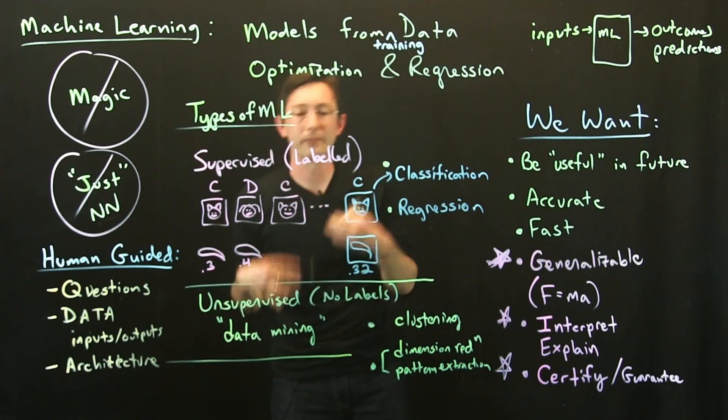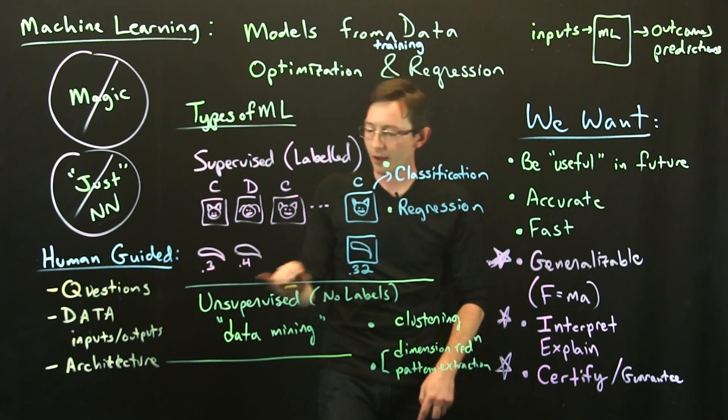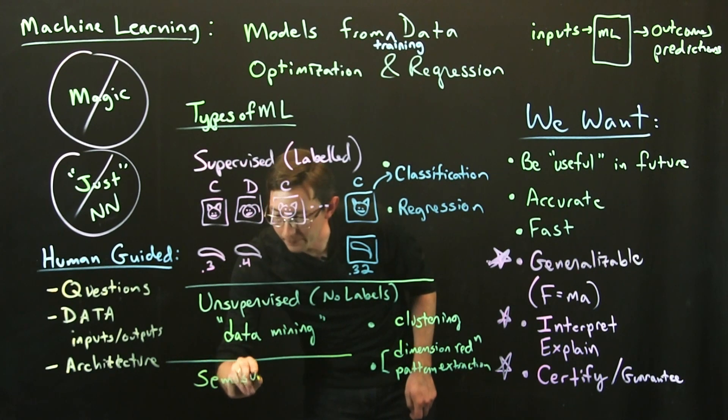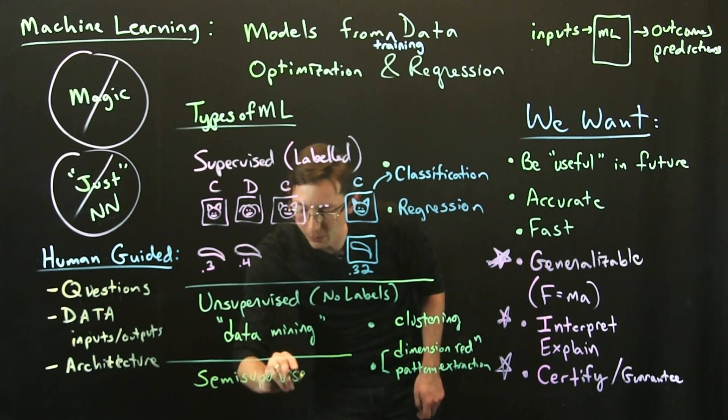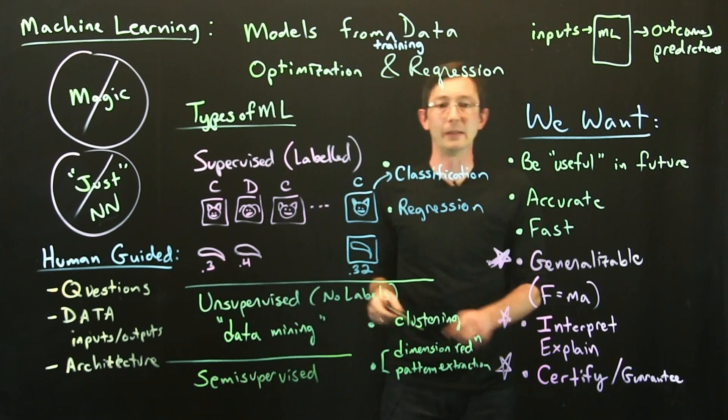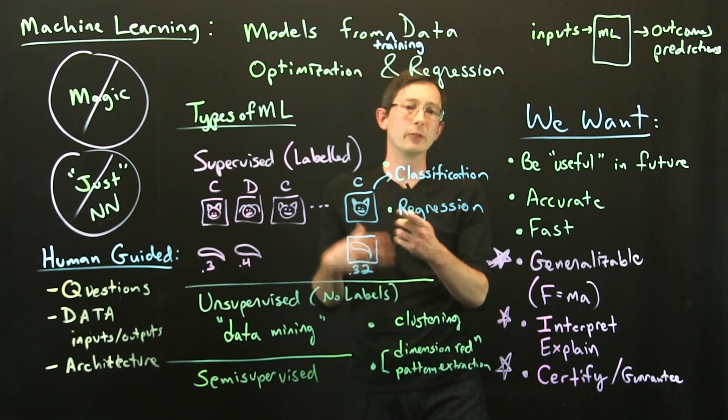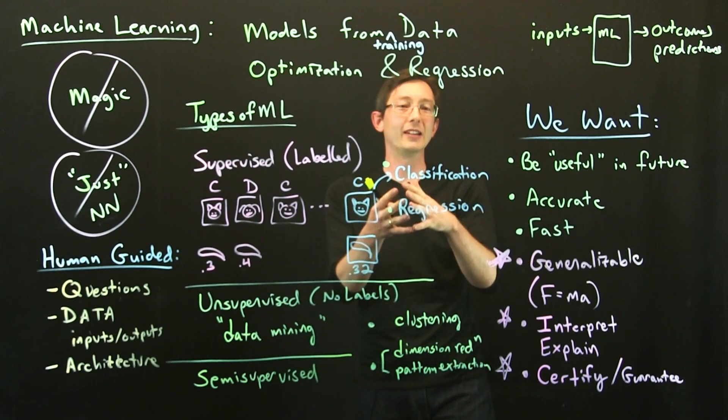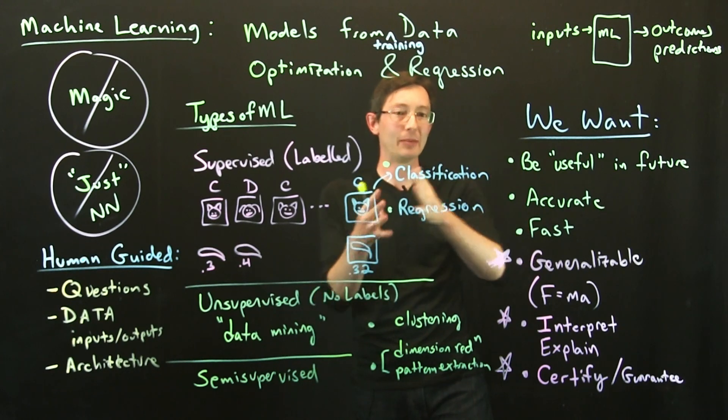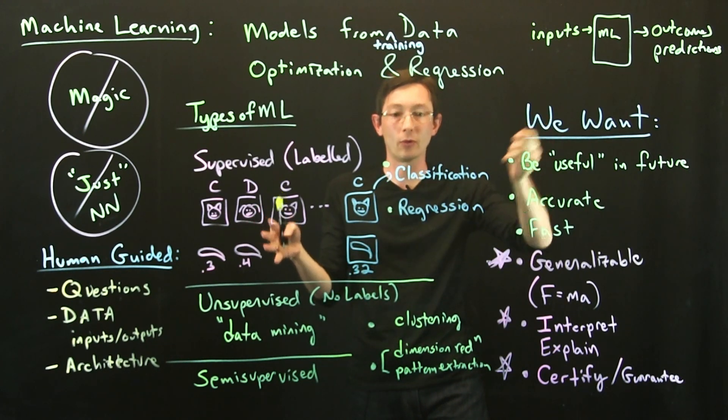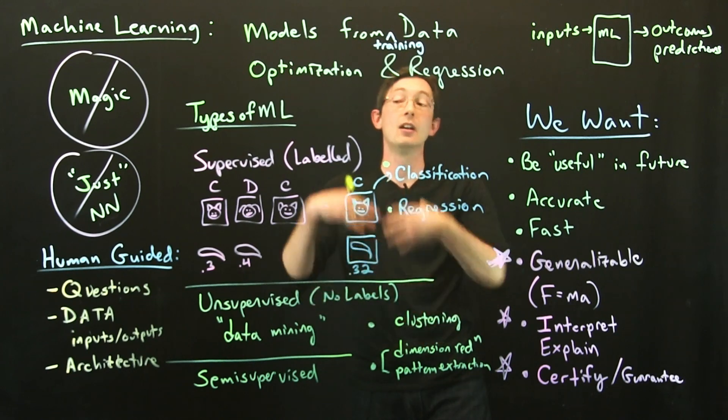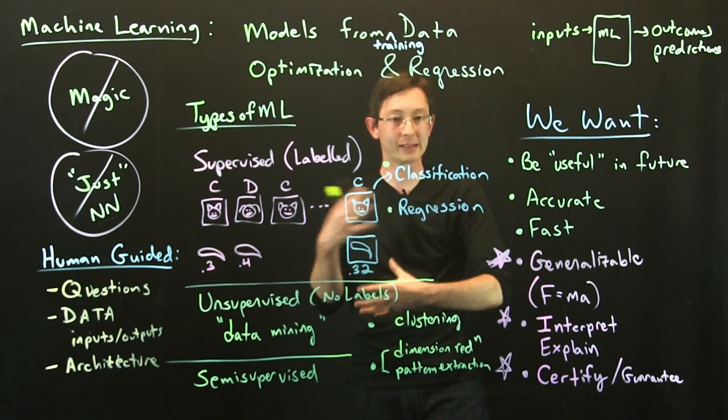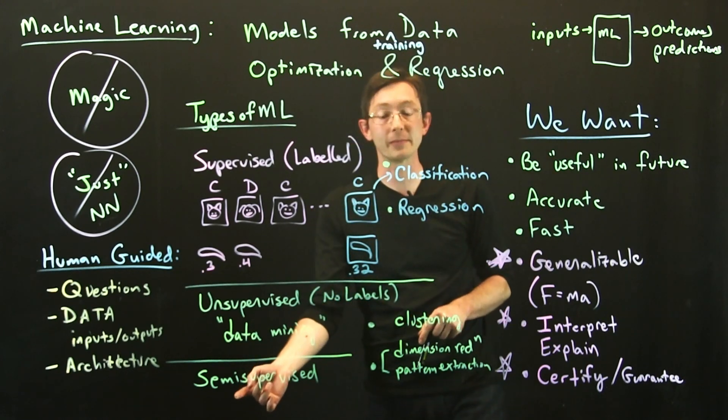There's also a group called semi-supervised. These are algorithms where maybe there's some expert feedback. In reinforcement learning, maybe my robot, my agent, gets a reward, but it doesn't get a reward after every action it takes—maybe after 10 actions it gets one reward. So there's partial information it gets from the environment or from a supervisor, but it has a lot of unlabeled data as well, and it has to kind of bring these together. So reinforcement learning...